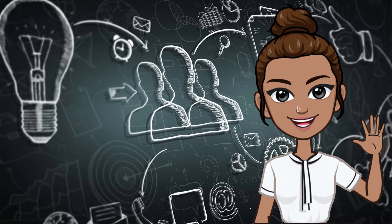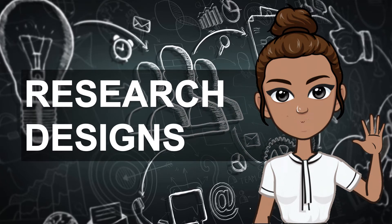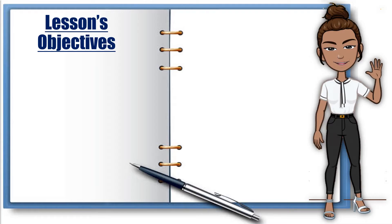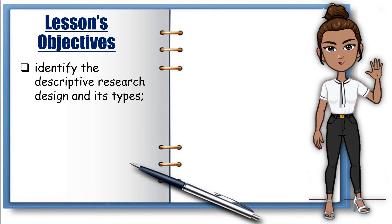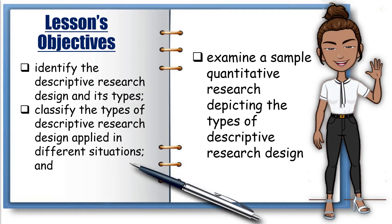Our lesson today is Research Designs. The lesson's objectives are: identify the descriptive research design and its types; classify the types of descriptive research design applied in different situations; and examine a sample quantitative research depicting the types of descriptive research design.